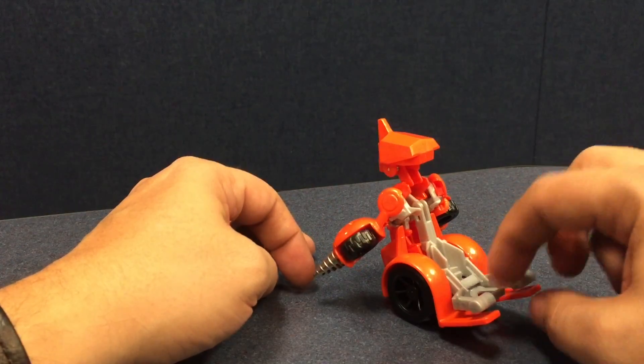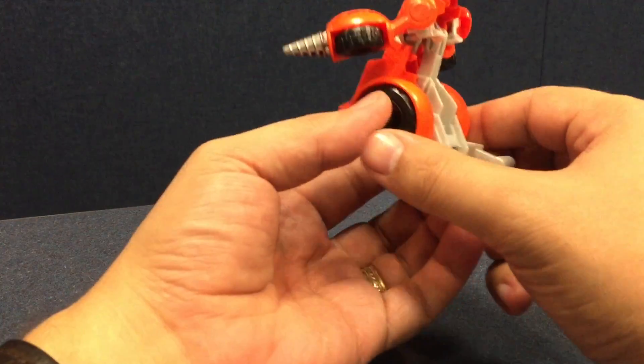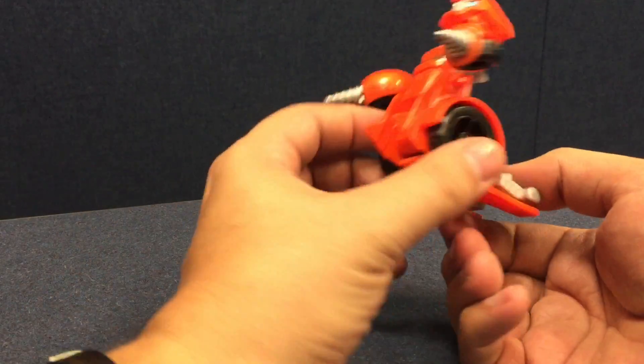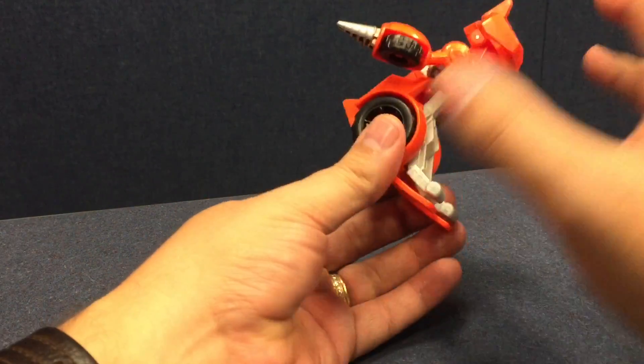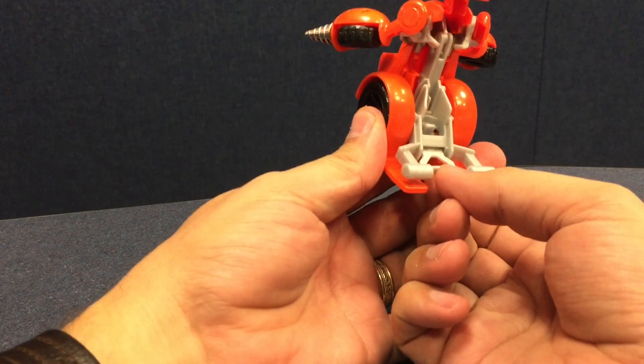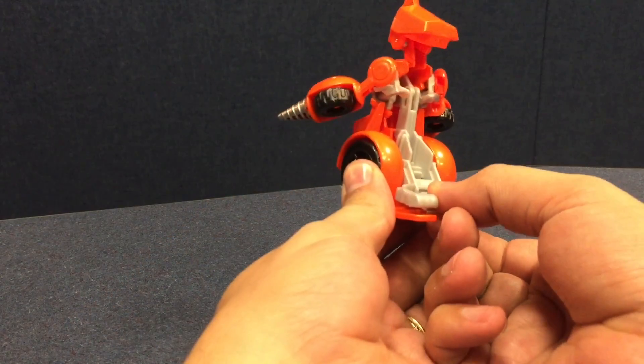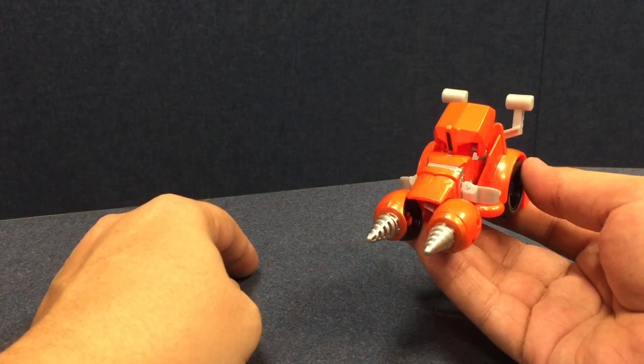And again, there's that clip back here I was telling you about. To transform him back into vehicle mode, all you do is just hold him by the side. You don't want to get in the way here because this is all going to go forward. Just grab this little handle right here and pull it. And he pops back down into his alt mode.